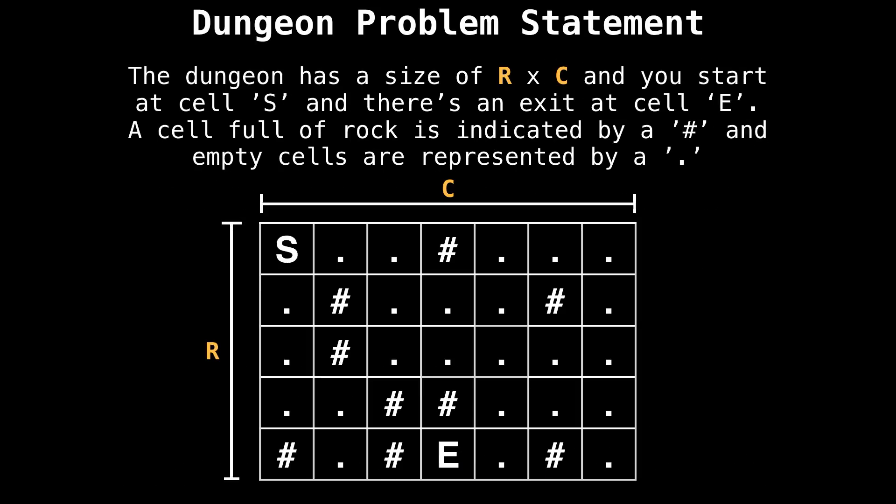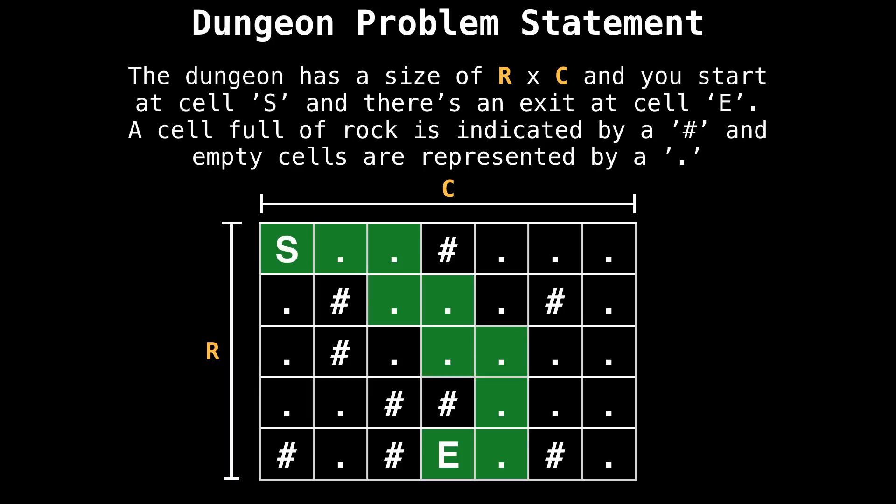The dungeon is a grid of size R by C and you start at the node with an S character, and there's an exit at the cell with an E. A cell full of rock is indicated by a pound sign or a hashtag, and empty cells are represented using a dot. In this particular setup, it's possible to escape the dungeon using this particular route highlighted in green.